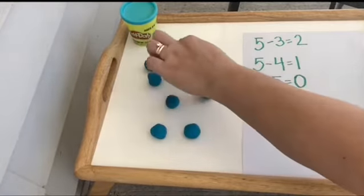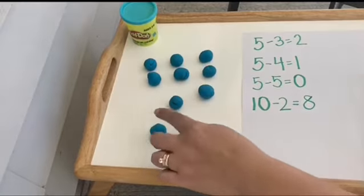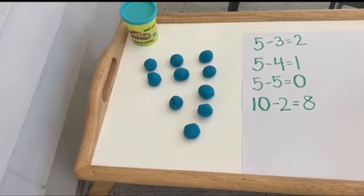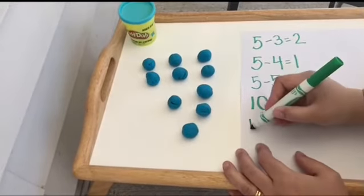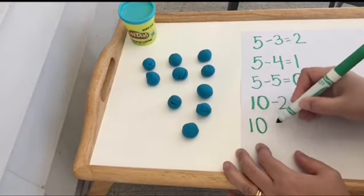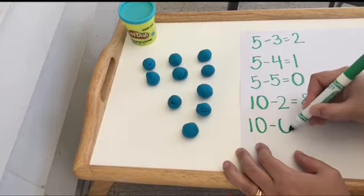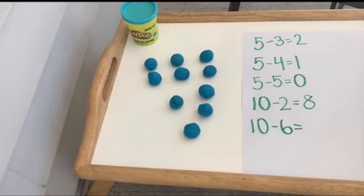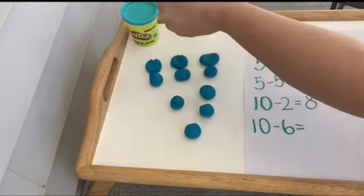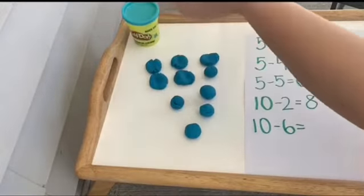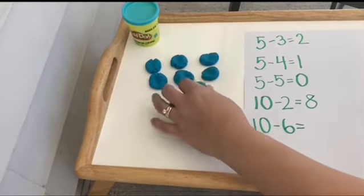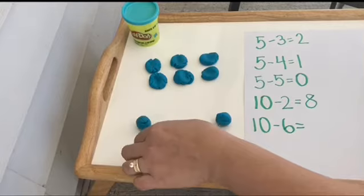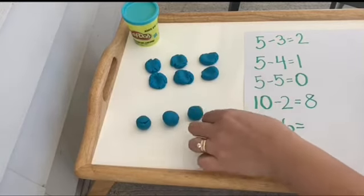1, 2, 3, 4, 5, 6, 7, 8, 9, 10. And let's take away 6. 10 minus 6. Let's see how many that equals. 1, 2, 3, 4, 5, 6. Oh, look. These are the ones I have left. 10 minus 6 equals 1, 2, 3, 4.